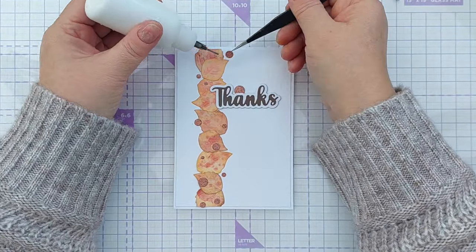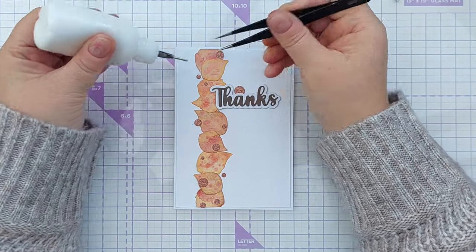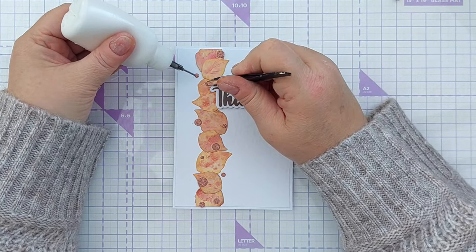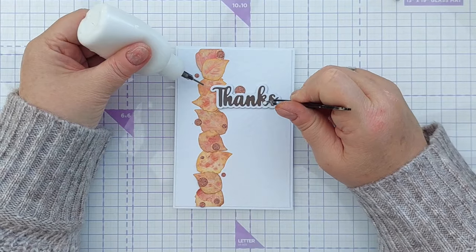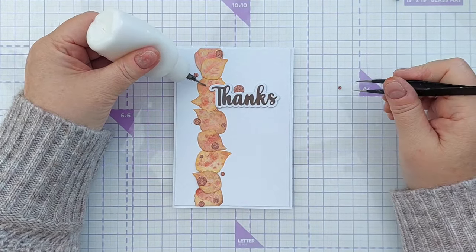This wouldn't be a card of mine if it didn't have some kind of dots on it, so I used some copper glitter cardstock circles from my little stash of die cut circles and glued them down around and about the sentiment and the leaves in a cascade coming down the card.